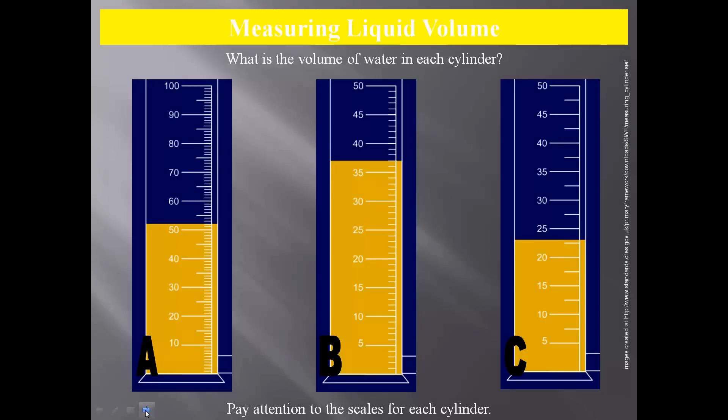Let's look at the volume of water in each of these cylinders. For cylinder A, we would have 52 milliliters of water. Cylinder B would be 37 milliliters. And cylinder C, we're looking at approximately 23. Notice on here, this is 20 to 25, so this would be 22.5, and it's a little bit above that, so about 23 milliliters there.